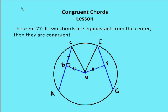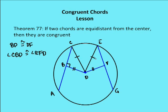So if two chords are equidistant from the center, then they are congruent. I have two chords equidistant from the center, so BD is congruent to DF. I also know that angle CBD is congruent to angle EFD, and that they're both right angles. And CD is congruent to ED, because all radii of a circle are congruent. By the HL postulate, triangle CBD is congruent to triangle EFD.